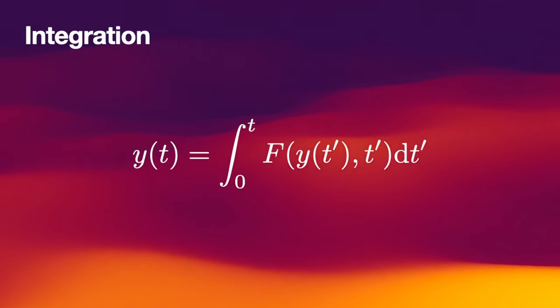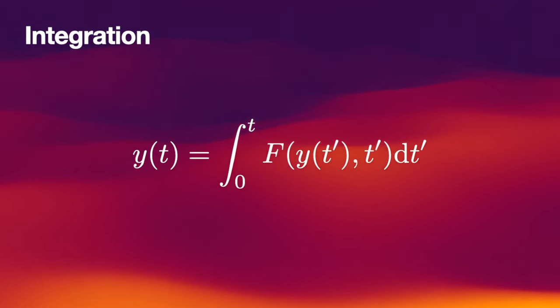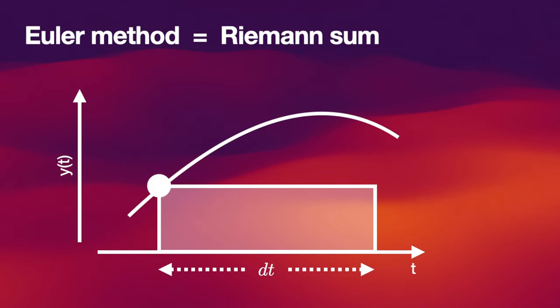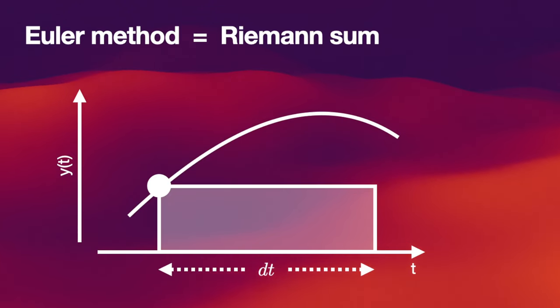You probably already know several methods to approximate integrals on the computer. One of the simplest is the Riemann sum. It divides the interval over which we want to integrate a function into smaller intervals, and then approximates the area under the curve by small rectangles, where the value is taken either on the left or on the right-hand side of that small interval. So we have one function evaluation per small interval.